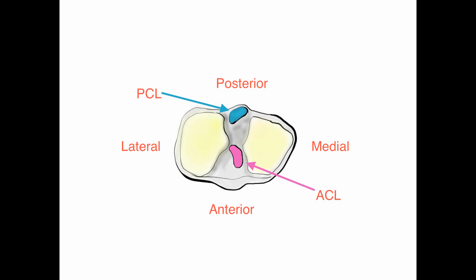We can see in pink the footprint of the anterior cruciate ligament, the ACL, and in blue the footprint of the posterior cruciate ligament, the PCL.